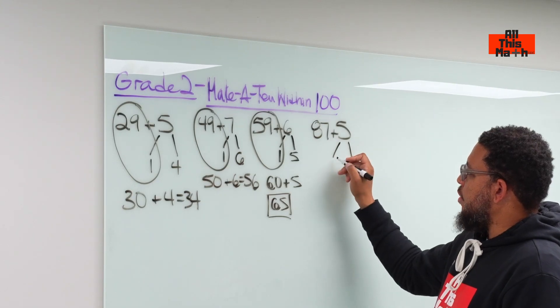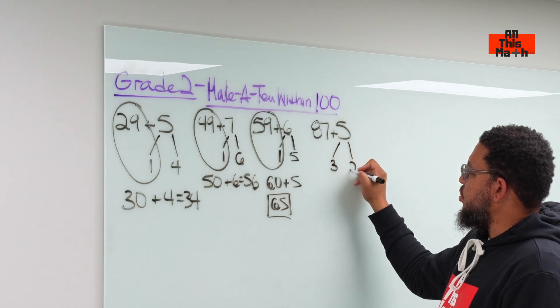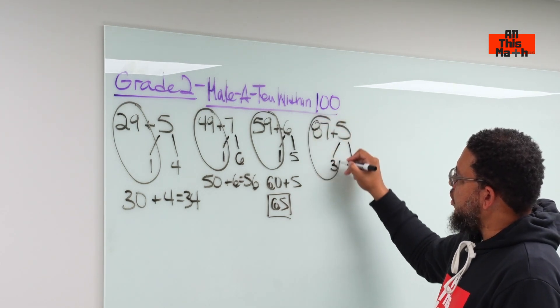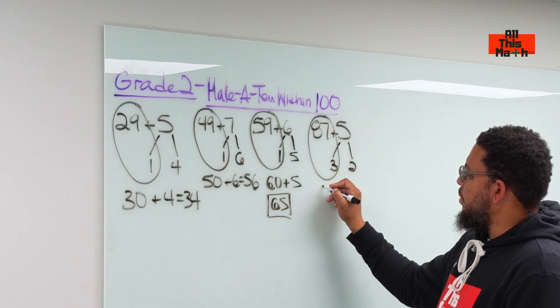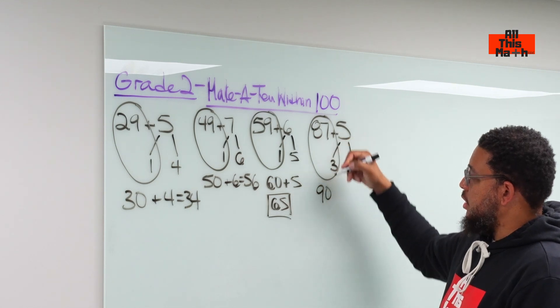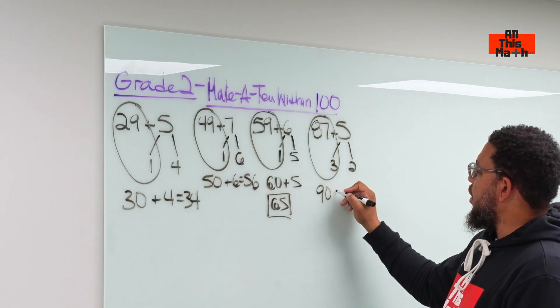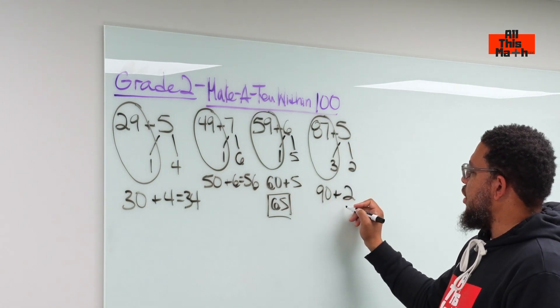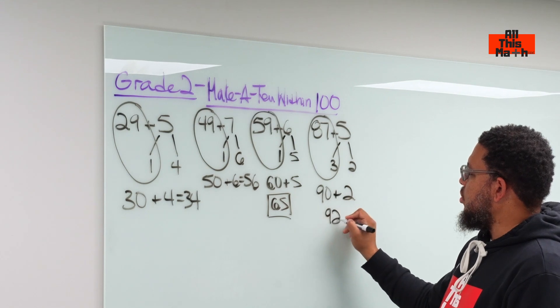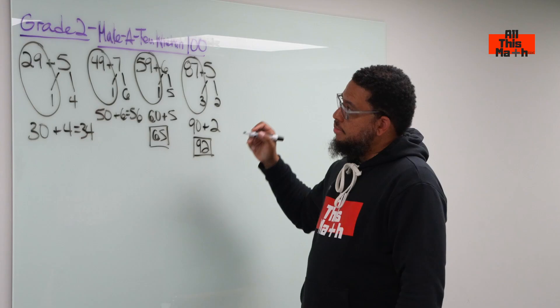So we take the 5, break it down into 3 plus 2. We put the 87 with the 3. The 87 with the 3 becomes 90. We just made our 10 or a multiple of 10. And then we're going to add 2 to that. So 90 plus 2 is going to be 92. And that is today's lesson.